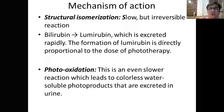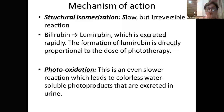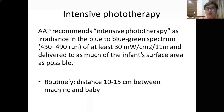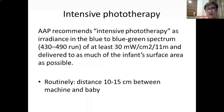Structural isomerization is slow but irreversible: bilirubin is converted to lumirubin and excreted rapidly, with formation proportional to the dose of phototherapy. Photo oxidation is an even slower reaction forming a colorless, water-soluble product excreted in the urine. Intensive phototherapy is defined as irradiance in the blue-to-blue-green spectrum (430–490 nm) of at least 30 microwatt per centimeter squared per nanometer, delivered to as much of the infant's surface area as possible.